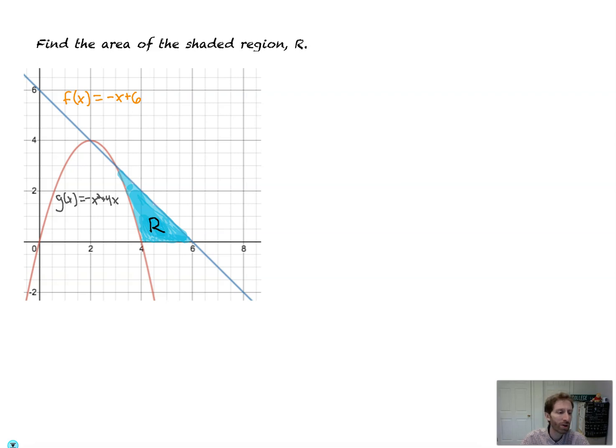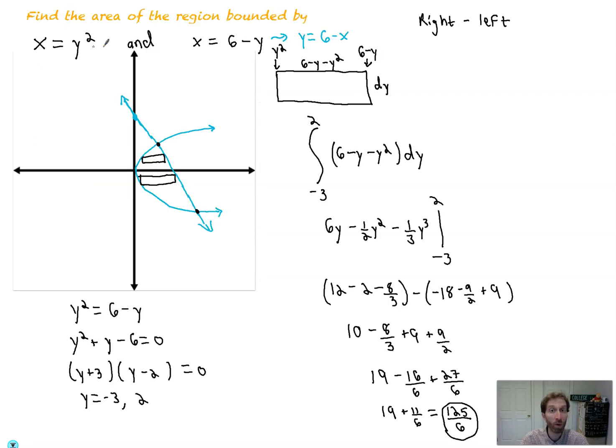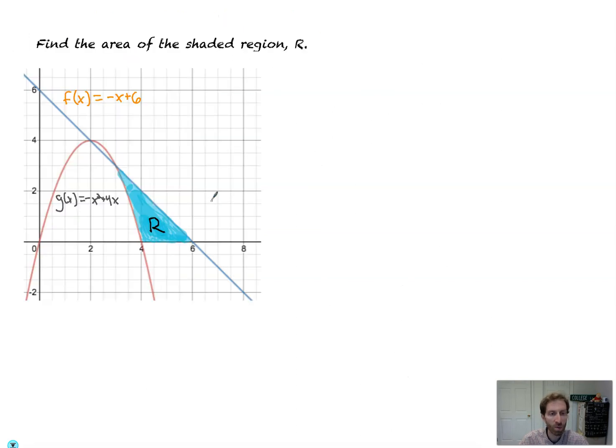And in this particular problem, this is one where we have to actually change everything in terms of x into in terms of y. And so it's one of those occasions where you weren't given things like in this last problem, where things are in terms of y right to start. So how do I know to change it in terms of y? Well, if you look at this, if we do vertical rectangles,